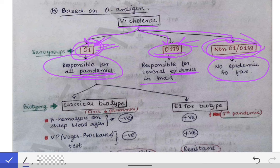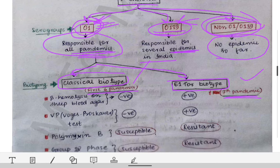We are most concerned with the O1 serogroup because it is responsible for most pandemics to date. The O1 serogroup has two biotypes: the classical biotype and the El Tor biotype. The classical biotype is responsible for the first six pandemics, while the El Tor biotype is responsible for the seventh pandemic. Vibrio cholerae has caused a total of seven pandemics.